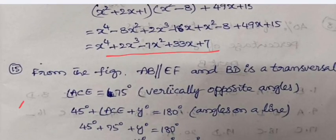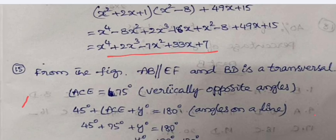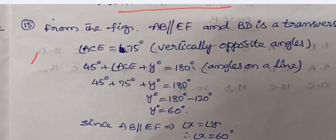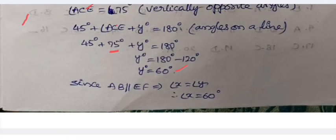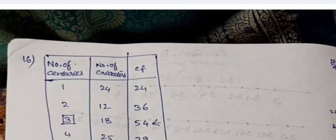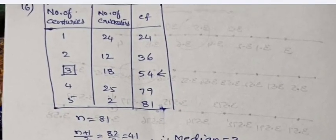From the figure, AB is parallel to EF and BD is a transversal. Vertically opposite angles are equal, so angle ACE is 75°. When angle ACE is 75°, here we can substitute 75, thereby we get y = 60. Since AB and EF are parallel, angle x equals angle y, so x is 60 degrees and y is also 60 degrees.